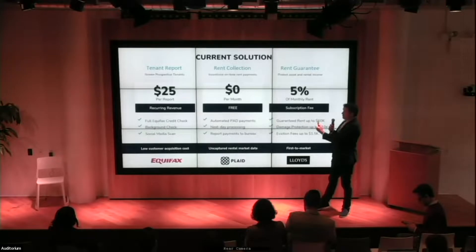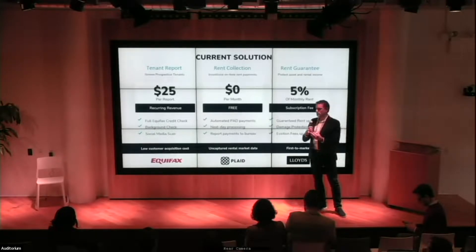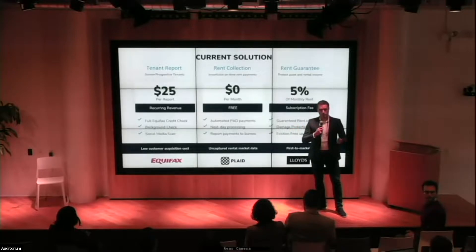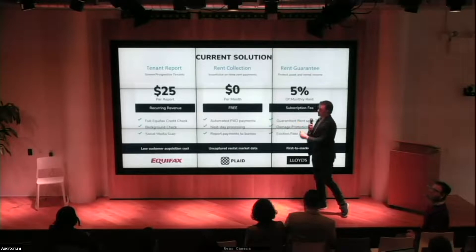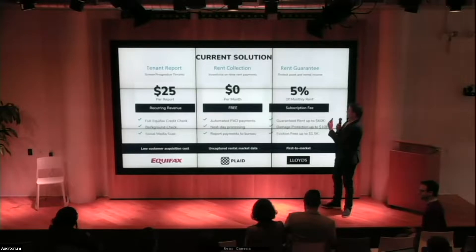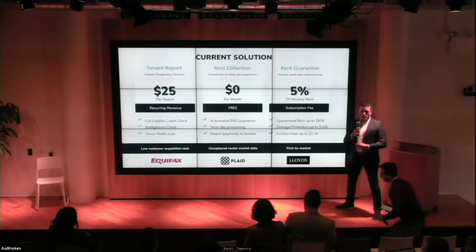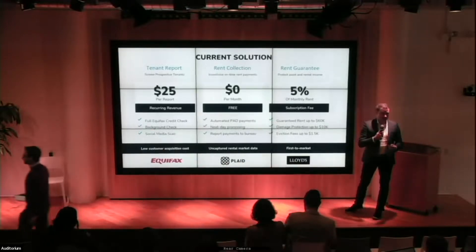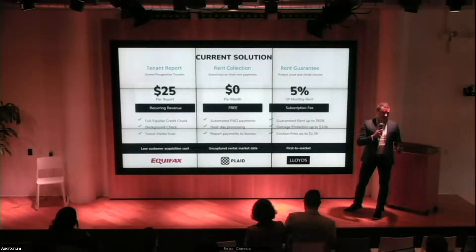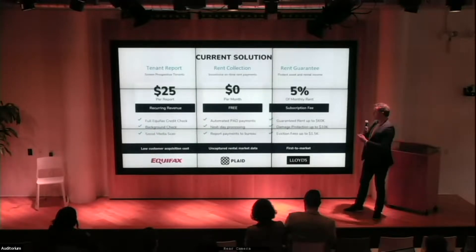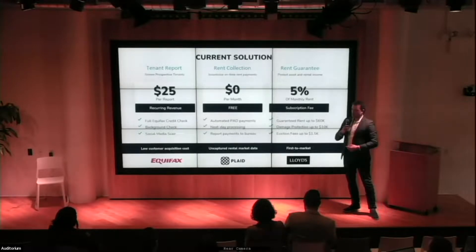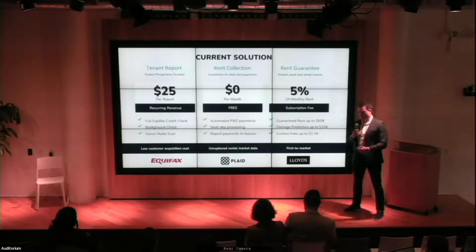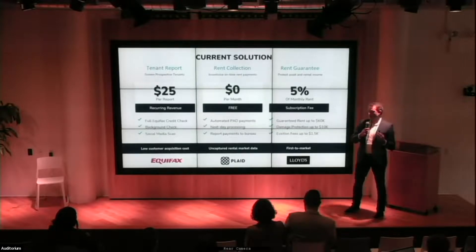We start with our tenant screening report — Canada's number one, with 10,000 reports a month. It gives you all the data you need to make a good decision before putting someone on the lease. We then collect rent and report it to the bureaus to incentivize tenants to pay on time and build their credit. Third, we guarantee the rent through our insurance-like product: we take 5% of monthly rent from the landlord, and in exchange guarantee up to 12 months of lost rental income in case of tenant default, cover legal fees, and cover damages up to $10,000 for vandalism or malicious damage.